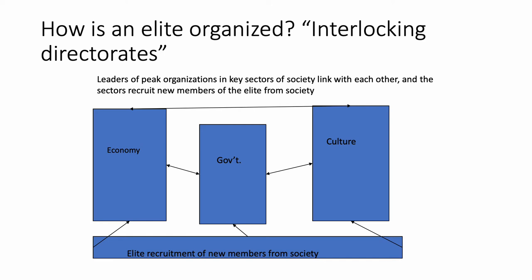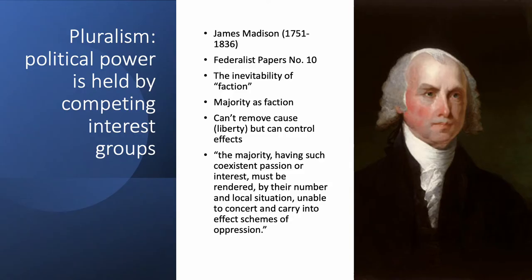The interlocking elite model shows people in key organizations — culture, government, economy — connecting with each other. They also recruit people: if you go to the right schools, even if you weren't born into the elite, you can get recruited into it. But in doing so, you get co-opted. An elite theorist would look at Barack Obama — not born into an elite family, but who ultimately became president and very wealthy — and argue the only way you get into the elites is by adopting elite values. Everyone who becomes an elite must do that.